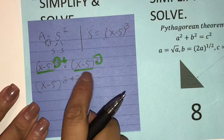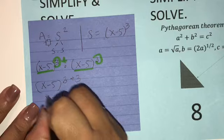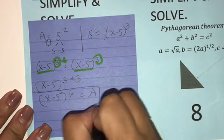So that means I have x minus 5, 3 plus 3. Because the bases are the same, we add the exponents. So x minus 5 to the 6th equals area. That's your solution.